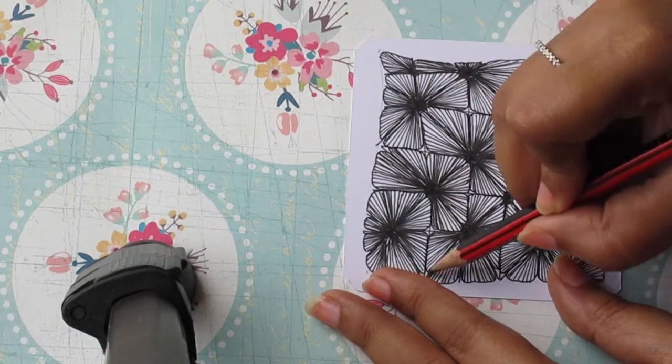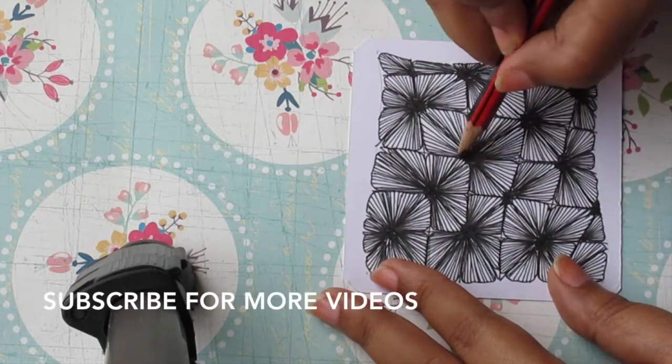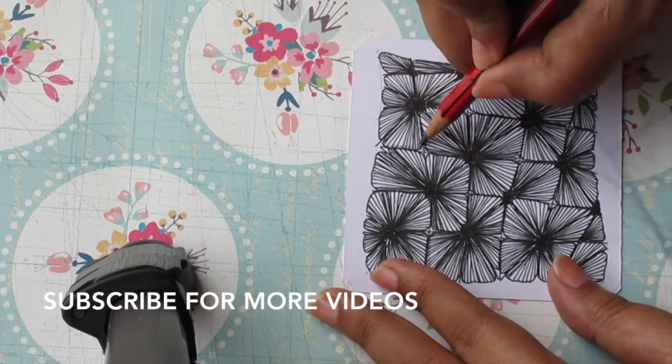As the end step, I'll start shading the edges of the flowers which seem to be above the other flowers and casting a shadow above the rest.